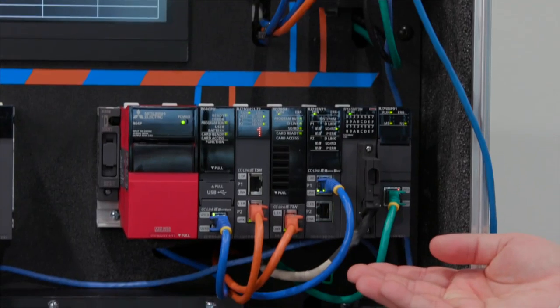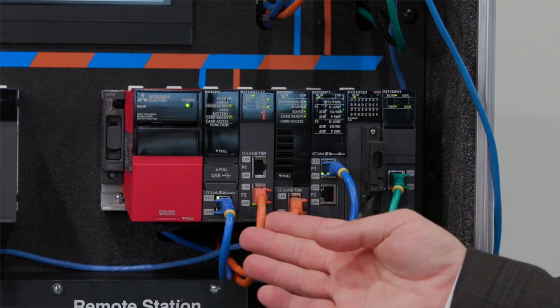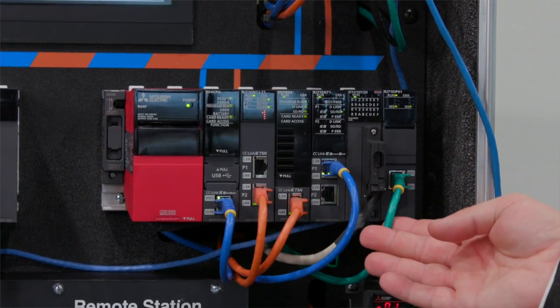It also has all the networks: blue for Ethernet, orange for IETSN, and green for Ethernet IP.